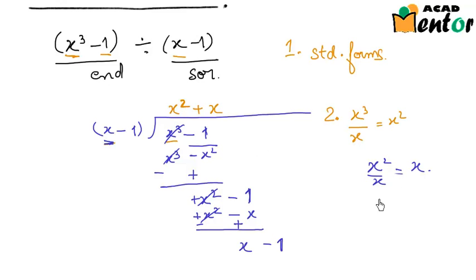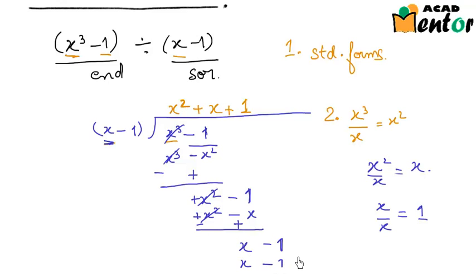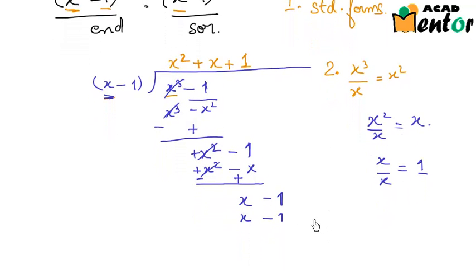Now I divide the first term of the new dividend — x — by x, the first term of the divisor. x divided by x is positive 1, so the next term of the quotient is plus 1. Multiplying plus 1 by the divisor x minus 1 gives x minus 1. Subtracting x minus 1 from x minus 1, both x and the constant cancel, leaving remainder 0.